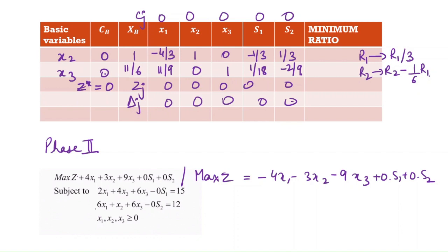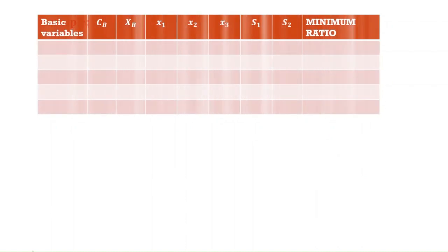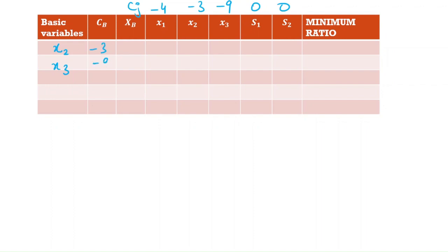The initial Phase 2 table carries forward all the same elements from the last Phase 1 table, with x2 and x3 as the basic variables. The only difference is the cj row, which now uses the original costs: -4, -3, -9, 0, 0. All other coefficient values are copied from the last Phase 1 table.